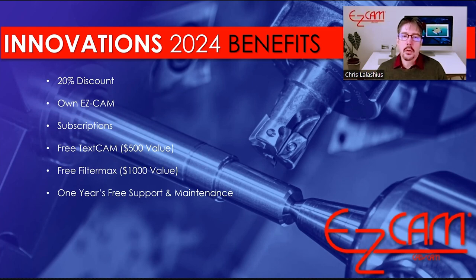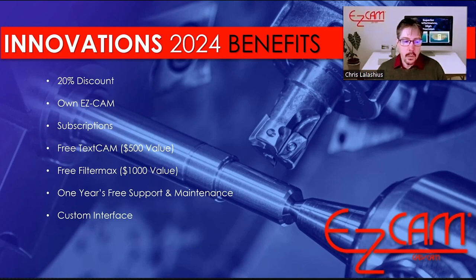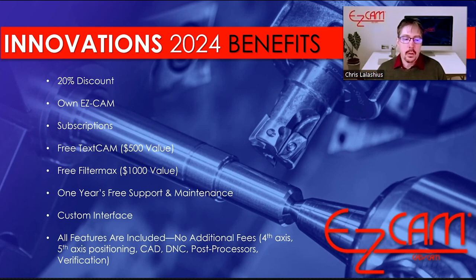You get one year of support and maintenance with your purchase, and that includes if you purchase an upgrade. We also offer a custom interface — we create toolbars and buttons so you can remove the repetitive task of sliding your cursor across the screen. All features are included, so when you buy Mill and Mill Pro, you get your 4th axis wrapping and indexing. For the Mill Pro, we have 5-axis positioning. We do include CAD — a Libre Atom 3D — and DNC.